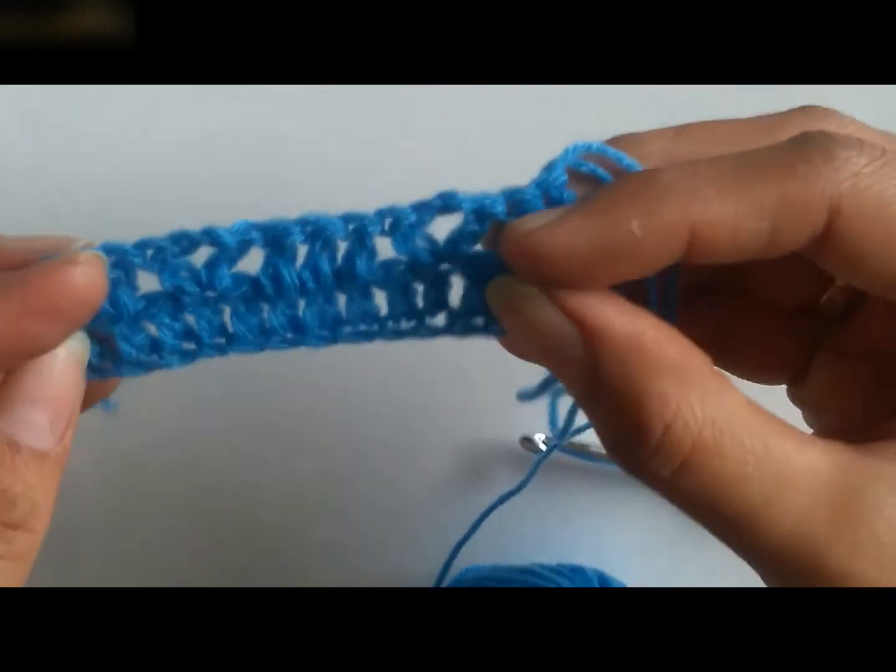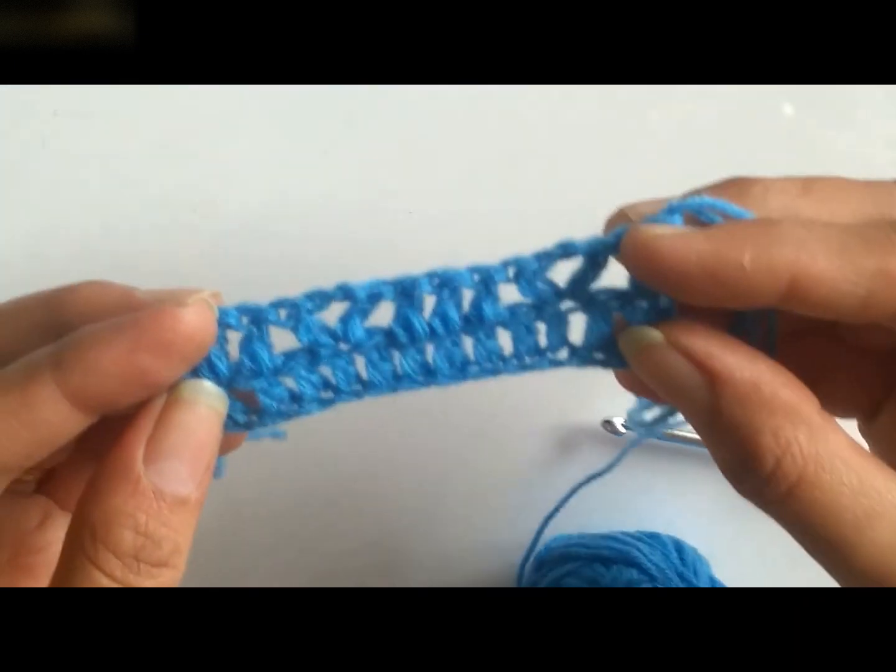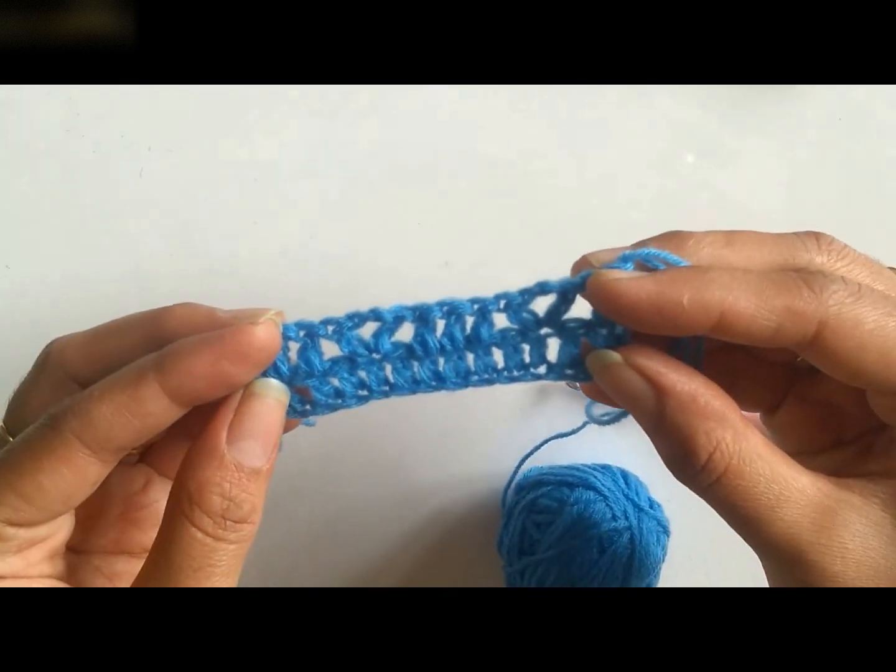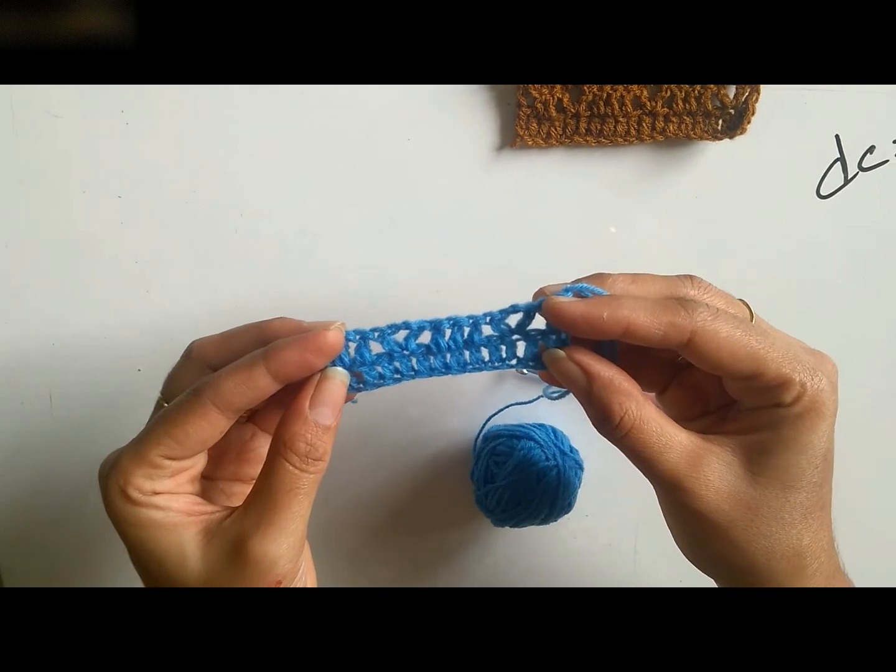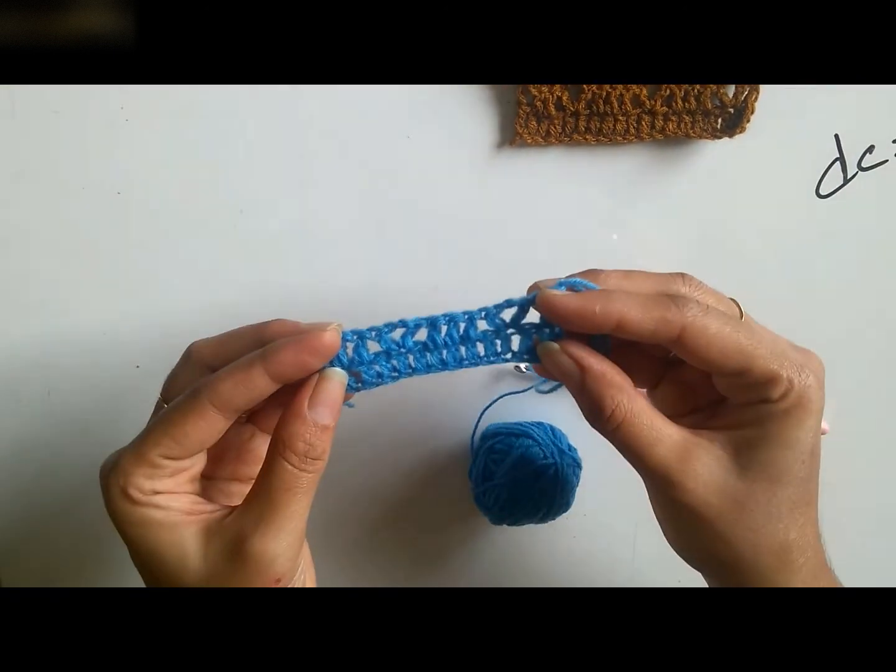So you can see this clearly how the V-stitches are getting formed. It's a very pretty stitch and in combination with all the stitches that I mentioned before you can work beautiful patterns using this stitch.